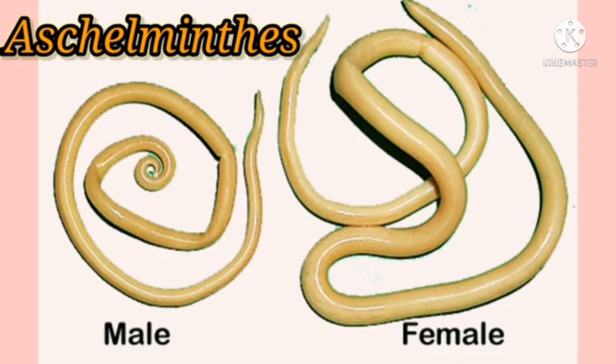Sexes are separate — males have male sex organs and females have female sex organs. The most common diseases caused by nematodes in human beings are elephantiasis and ascariasis. Elephantiasis is caused by the worm Wuchereria — it causes what we commonly call elephant leg disease. Examples are Ascaris as well as Wuchereria.